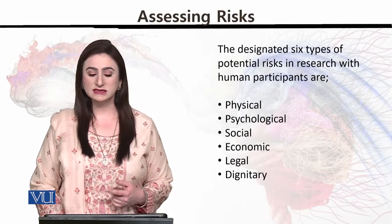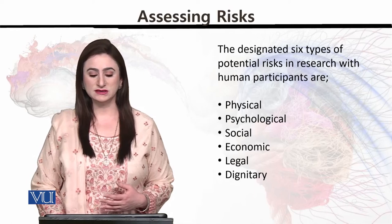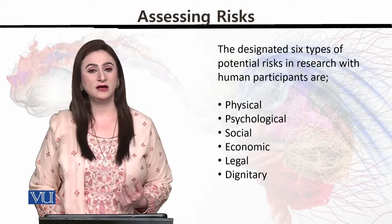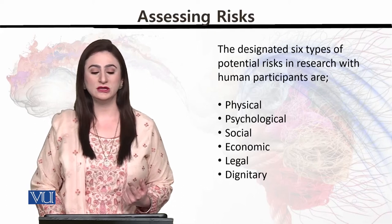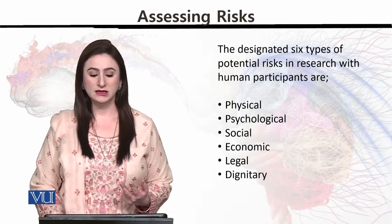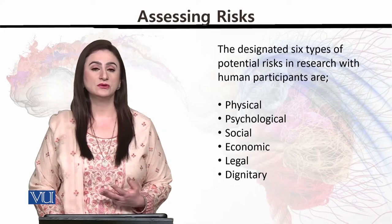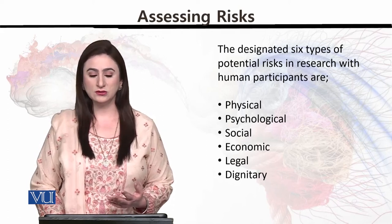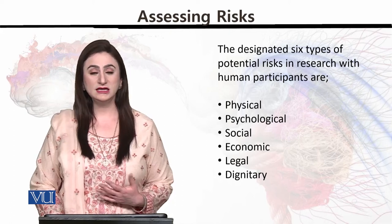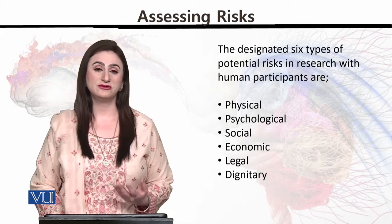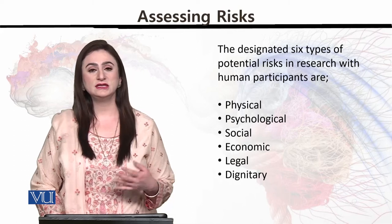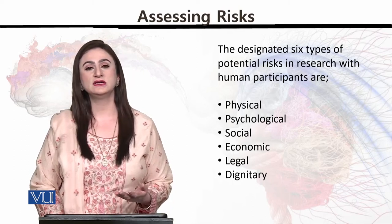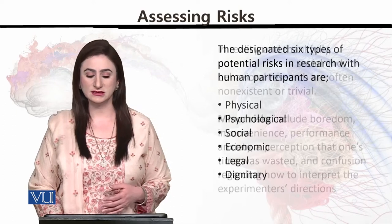The designated six types of potential risk in research with human participants are: number one, physical harms — जिसमें physical कोई नुकसान होने का खतरा हो; then psychological harm; then social harms — आपकी जो repute है, आपकी जो identity है, उसको harm होने का डर; then economic harm; then legal harm; and then dignitary harm. ये छे तरह के harms हैं, और इनके within हमें देखना होगा कि ये research किस तरह का harm create कर सकती है.